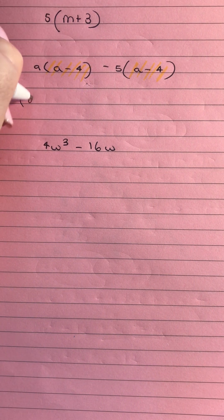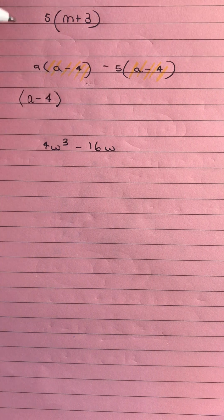So it's a little bit different to when we just had letters or numbers. So we're going to bring that bracket out the front and what's left over will go in our other bracket. So we're left with a take 5 and that's how we factorise that one.